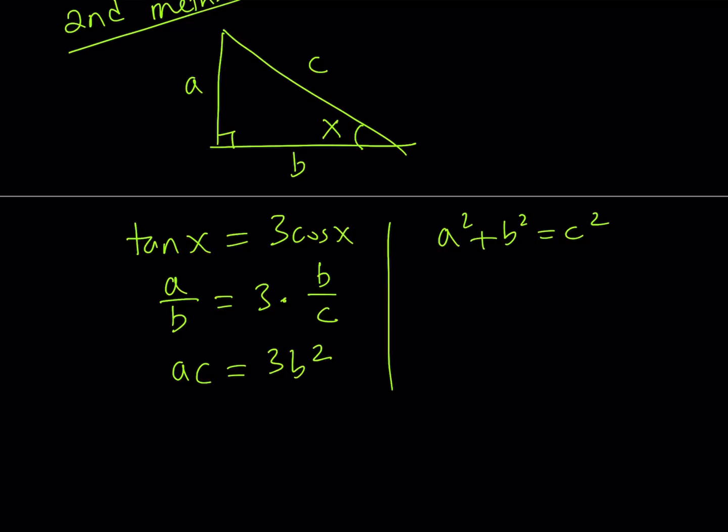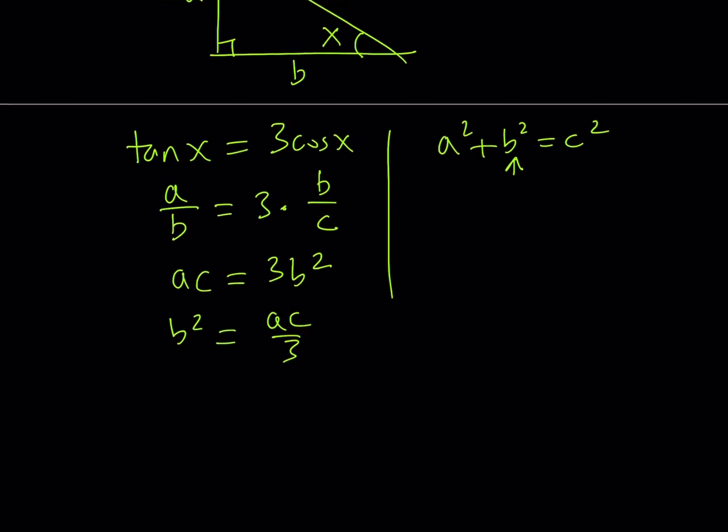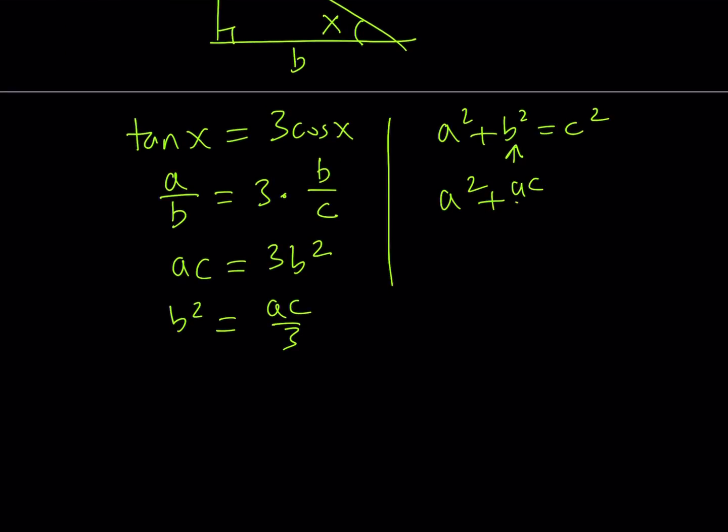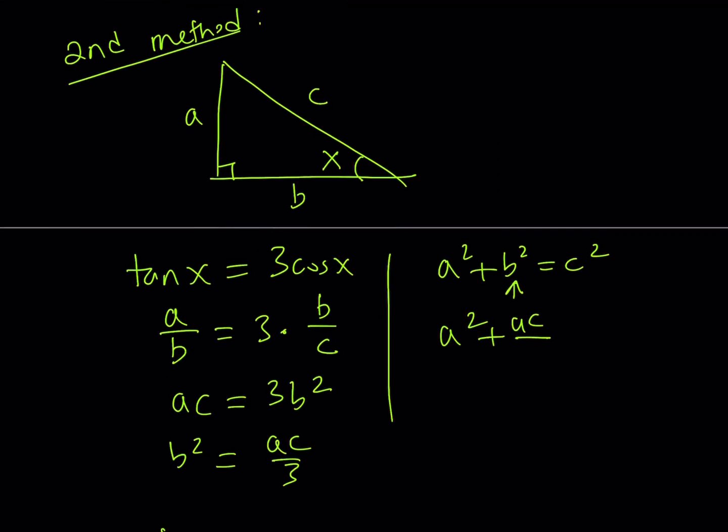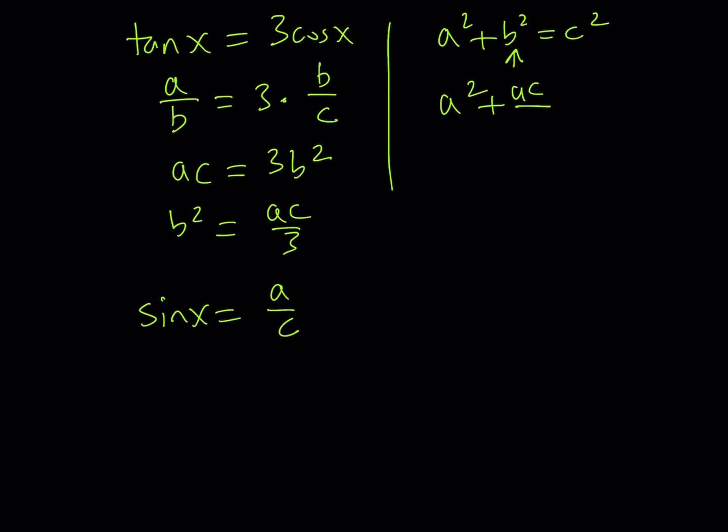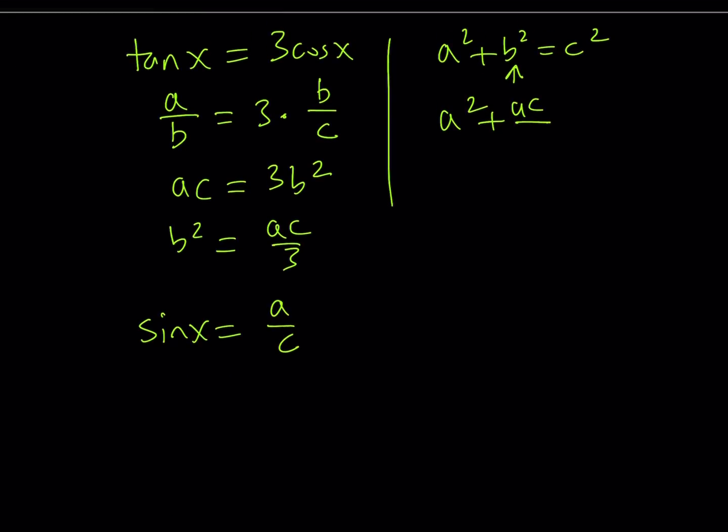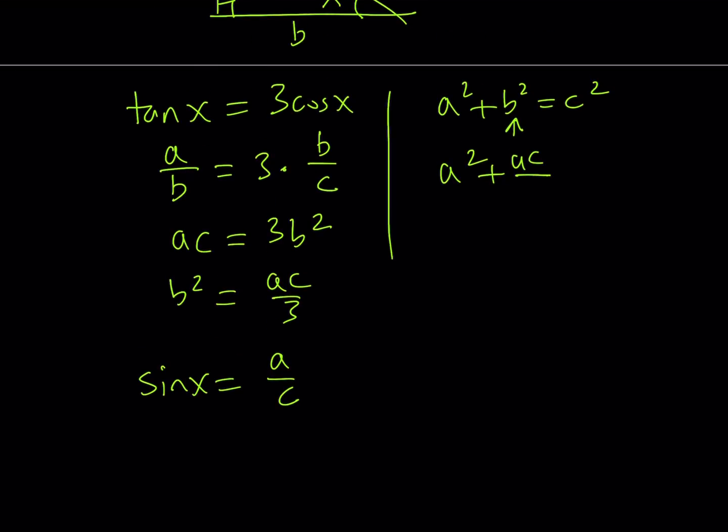We know that a squared plus b squared is equal to c squared, thanks to Pythagoras and his friends. And we can easily substitute this into our equation. But how do you substitute this? Well, from the first equation, we know that b squared can be written as ac over 3. So I can just go ahead and make a substitution here, replace b squared with ac over 3. The reason why I replace b squared with something is because I'm trying to find sine of x, and sine of x can be written as, in this right triangle of course, a over c. Since I want to find a over c, I don't really care about b. 2b or not 2b. That is the problem.